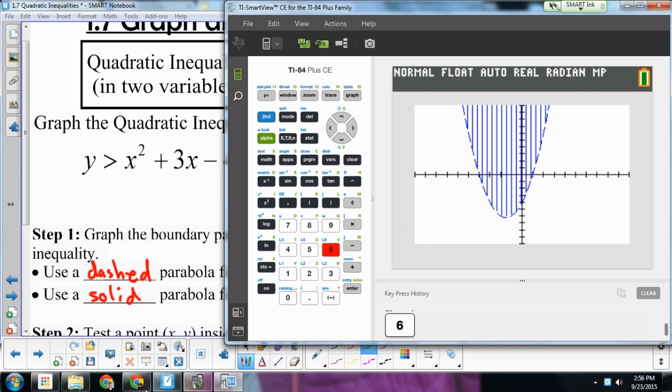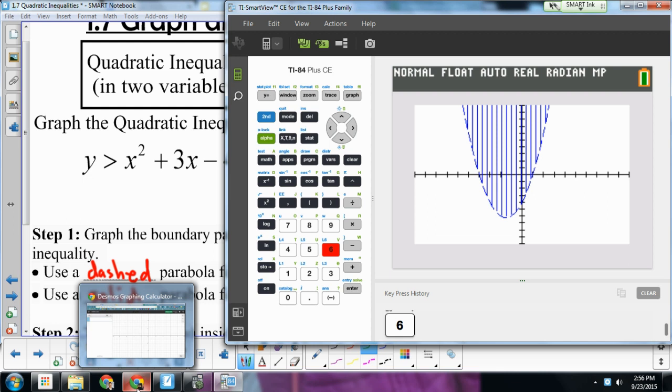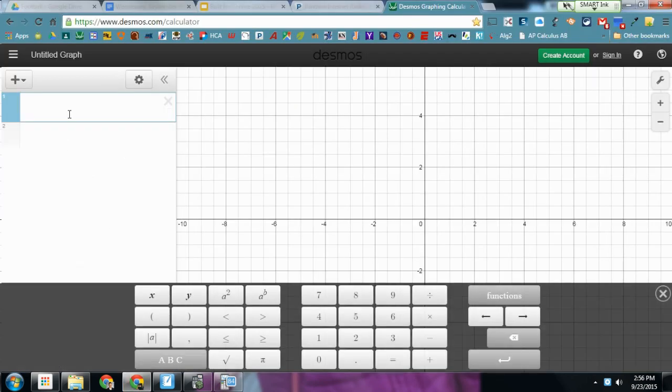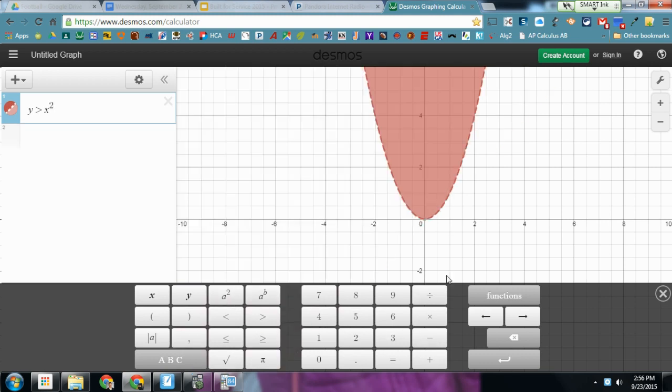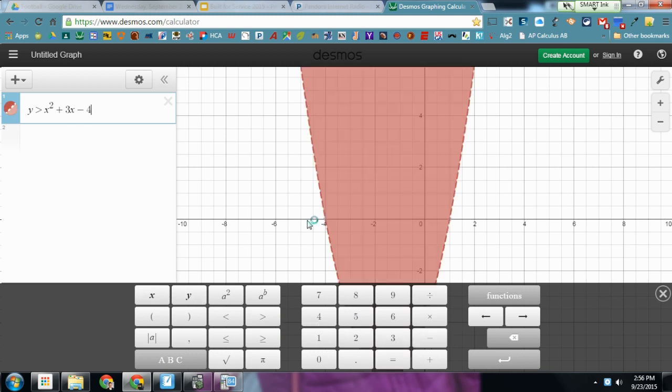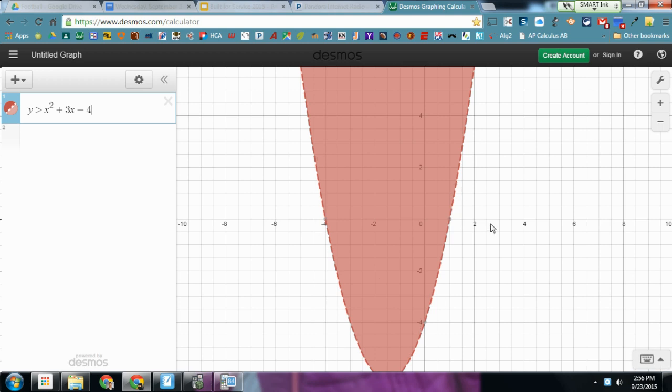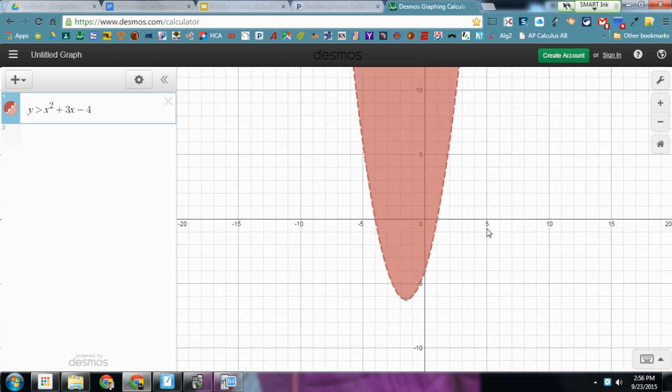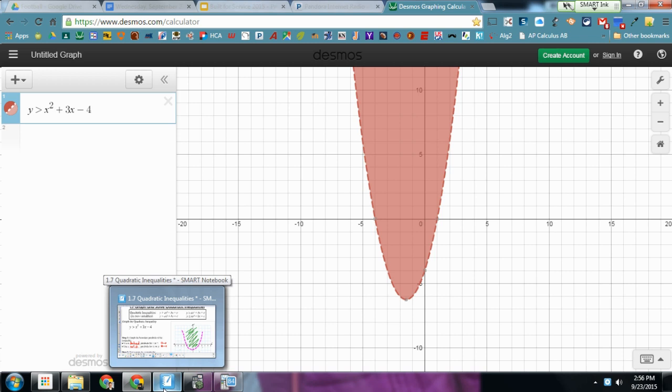Very nice. The third and final way you could graph a quadratic inequality in two variables is by using Desmos. I could type in Y is greater than. You can use the button right here or the button on your keyboard. Y is greater than X squared. I already started to see our graph forming. Plus 3X minus 4. And there we go. There's a dashed line with the shading right where it needs to be. I'll zoom out a little bit. Looks just like it did on the calculator. So multiple ways of graphing quadratic inequalities in two variables by using technology.